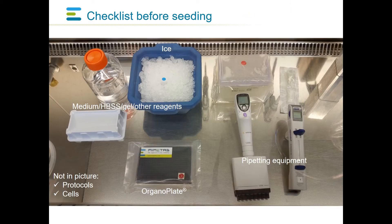Before seeding of tubules, make sure the following components are present: ice for maintaining the ECM gel at low temperature, medium, HBSS, ECM gel, and other reagents needed for your experiment. Pipetting equipment including a single and multi-repeating pipette, a two-lane 400 Mimetas organoplate, protocols, and of course cells. The harvesting, counting, and dilution of cells is not covered in this video.